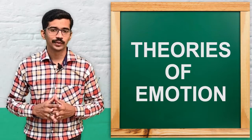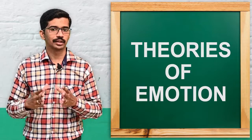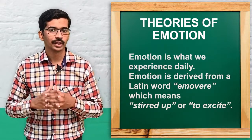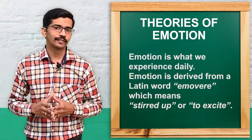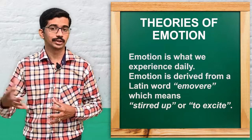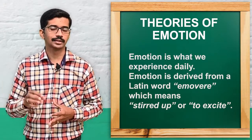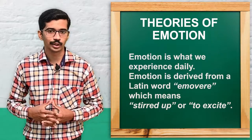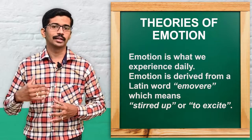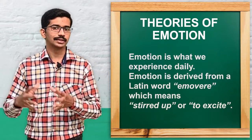Hello everyone. The topic we cover today is theories of emotion. Before going to the theories of emotion, we will see the meaning of emotion. What is an emotion? It is our day-to-day experiences — daily we are experiencing one or the other type of emotion. The word emotion is derived from a Latin word 'imovere', and the meaning of imovere is nothing but stirred up or to excite. Simply, emotion is an excited or stirred up state of an individual, and it is purely a private experience. As a result of this emotion, certain behavior will be developing in that individual.